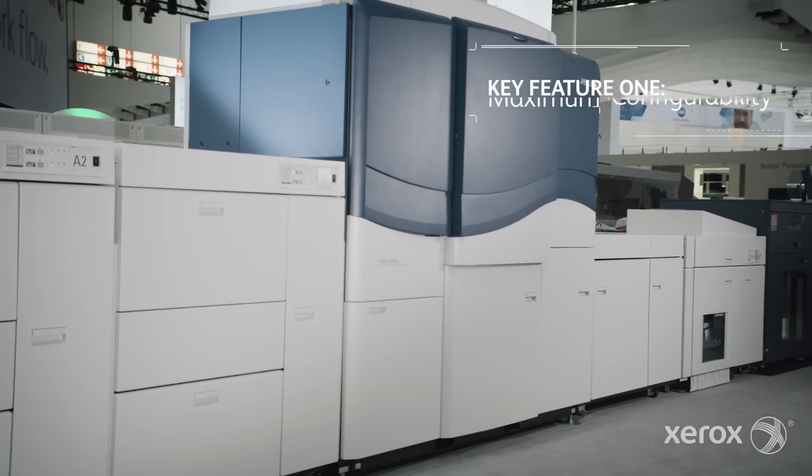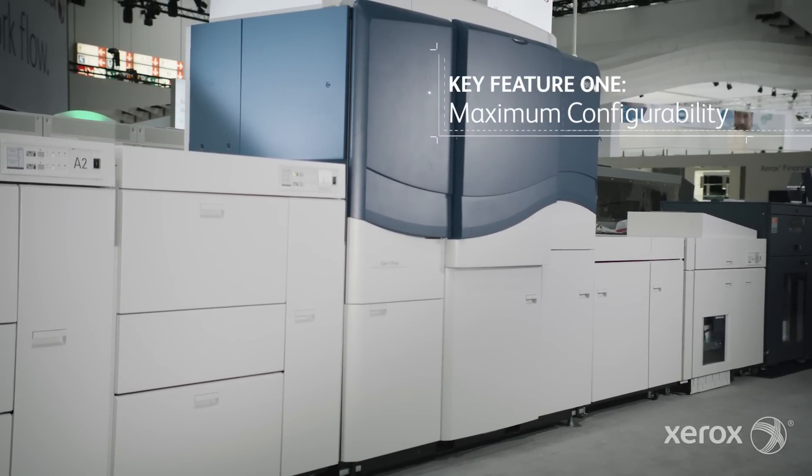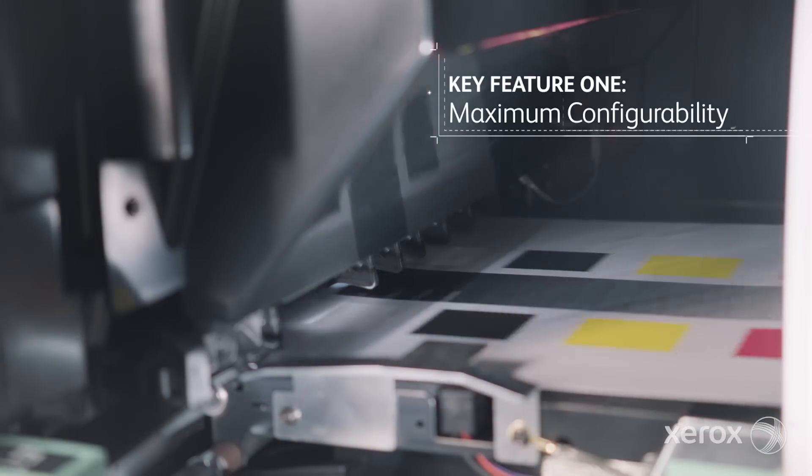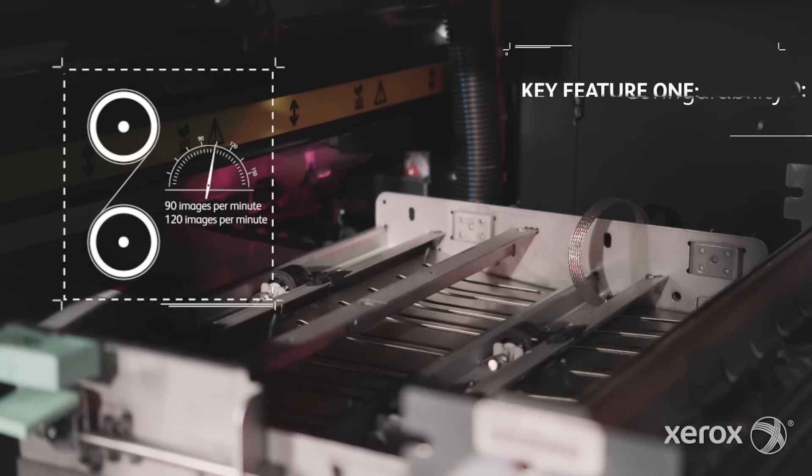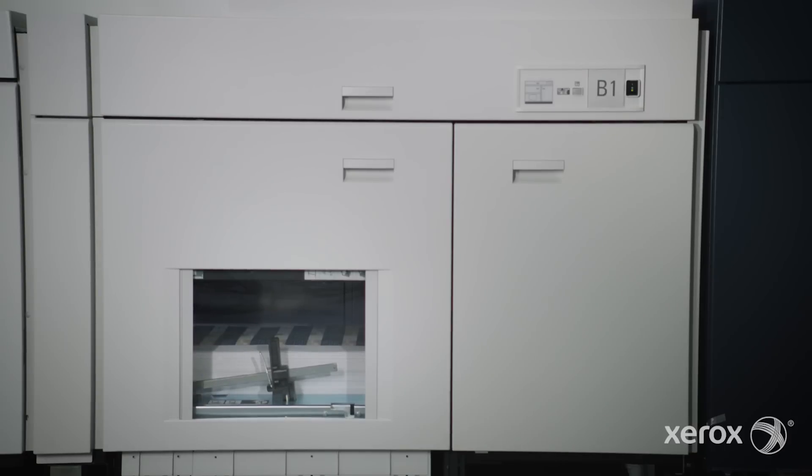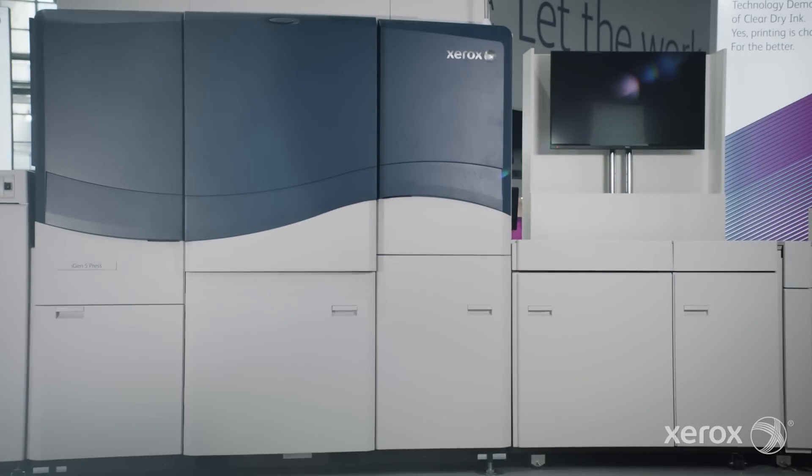The first key feature is maximum configurability. It allows you to choose your speed—90, 120, or 150 images per minute—number of print stations, 4 or 5, and the feeding and finishing options that make the most sense for you.